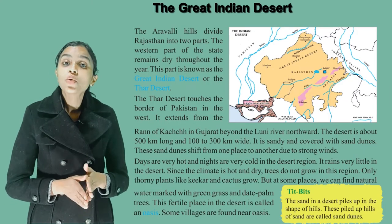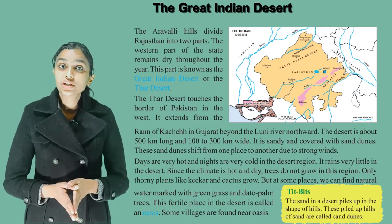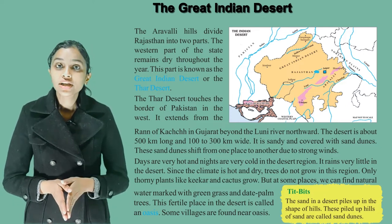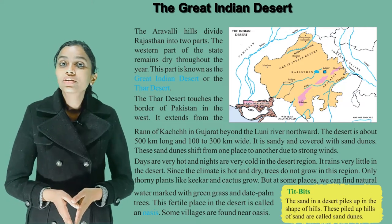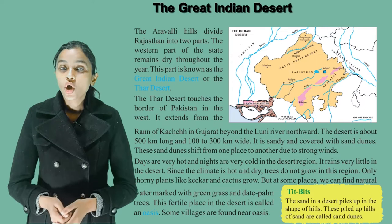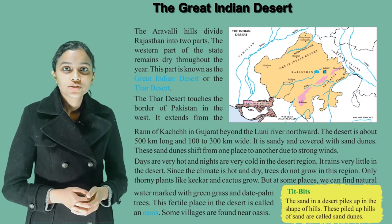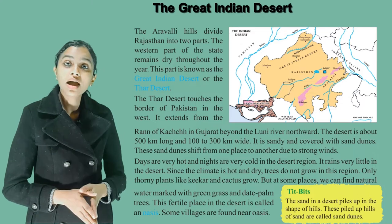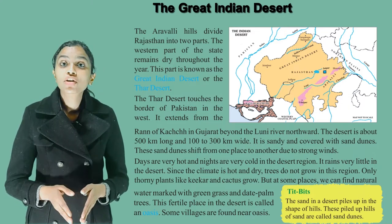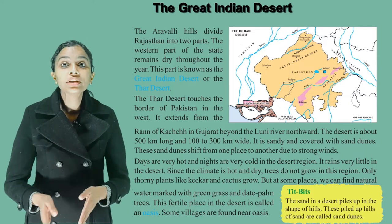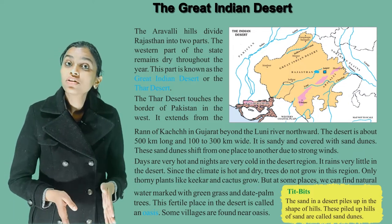The Aravalli Hills divided Rajasthan into two parts. The western part of the state remains dry throughout the year. This part is known as the Great Indian Desert or the Thar Desert. The Thar Desert touches the border of Pakistan in the west and extends from the Rann of Kutch in Gujarat beyond the Luni River northward.